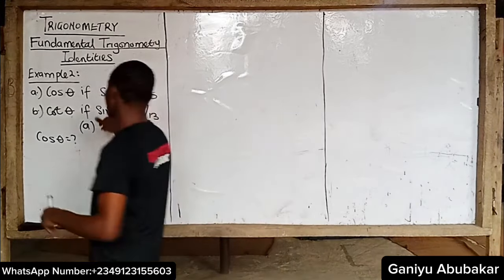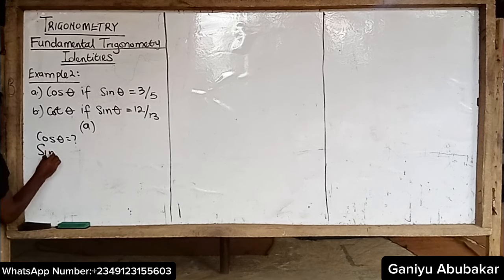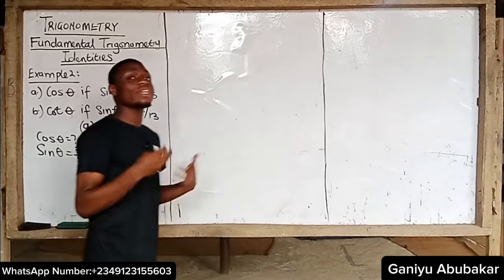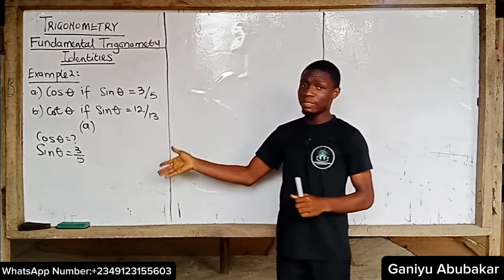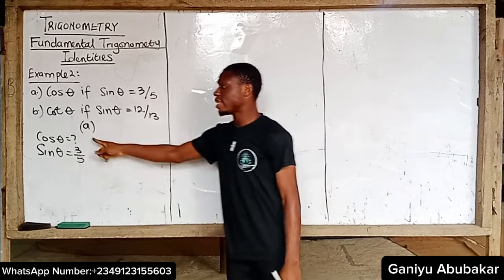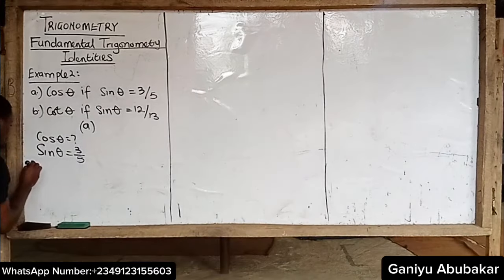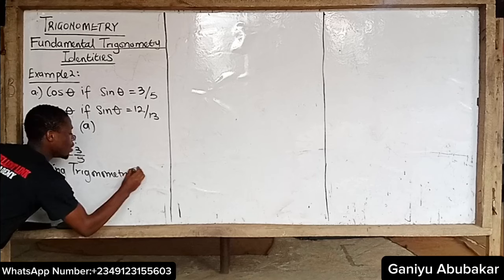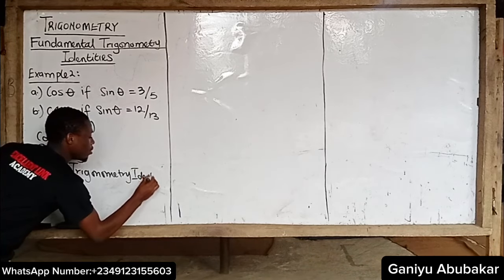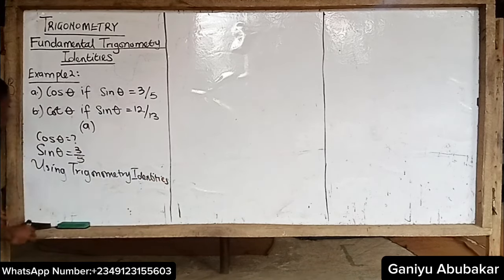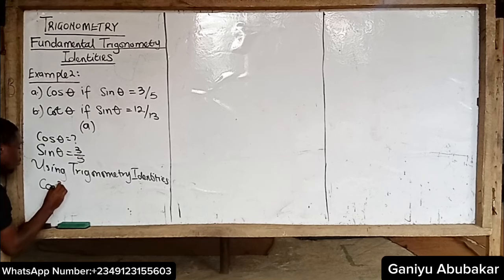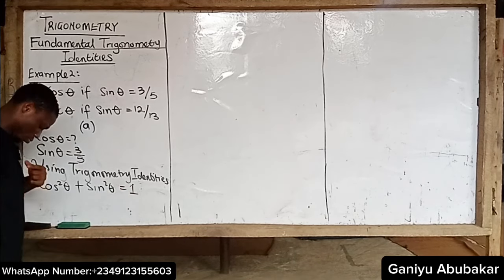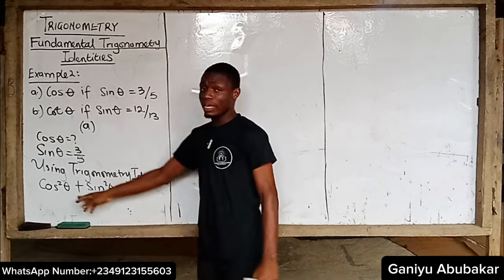From here, I'm given sin theta and I'm looking for cos theta. Given sin theta, how do I get cos theta? The idea is that I'll recall a relationship between sin and cos. Using trigonometric identities, recall that cos squared theta plus sin squared theta is equal to 1.